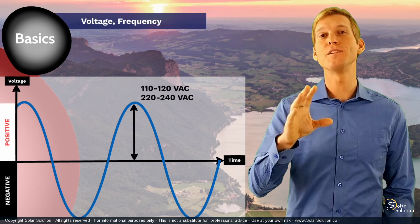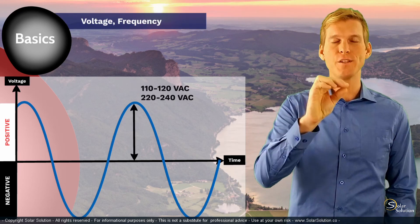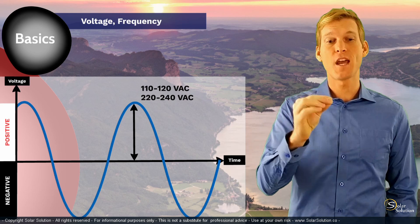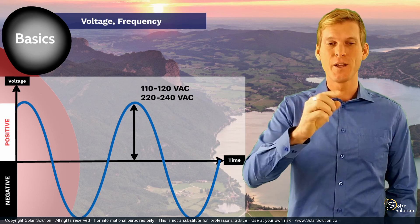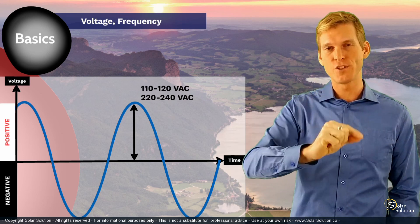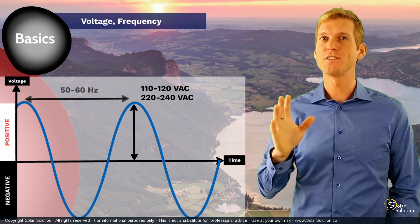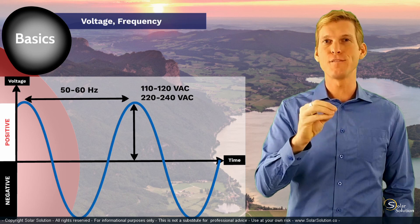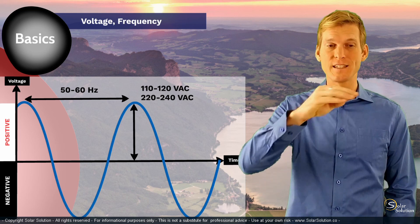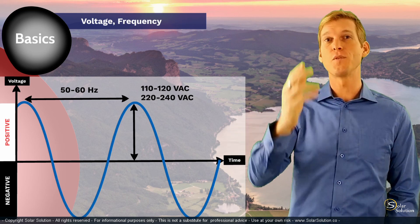You might have also heard about the frequency of an AC power source. This refers to the amount of times per second whereby the sine wave changes polarity. Normally you have a 50 or 60 hertz frequency, meaning 50 or 60 times per second this waveform changes polarity.